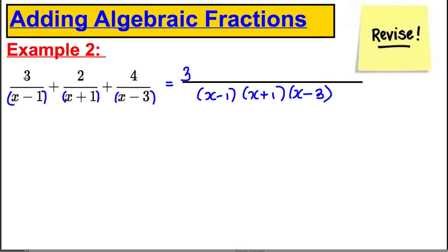Now, we had a three here. This needs to be multiplied by this one and this one to have this on the denominator. So we'll have an x plus one, x subtract three. Then we'll deal with the two. So we have plus two. It needs to be multiplied by this one and this one. So we have an x subtract one, x subtract three.